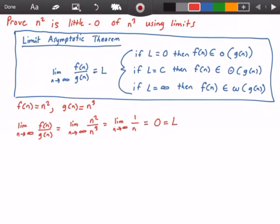So now we're going to look at the three cases to see which case this applies to. And we can see that this applies to the first case that states if L is equal to 0, then our function f(n) belongs to little-o of g(n).